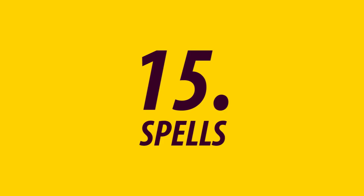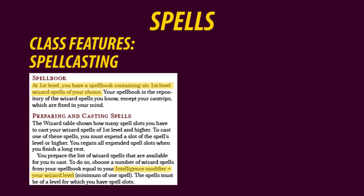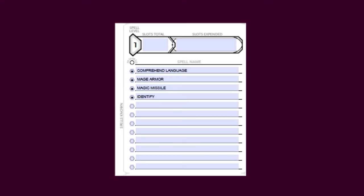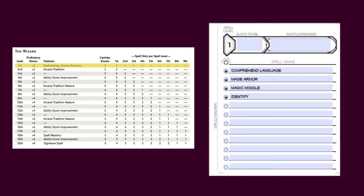How many spells a character can learn and prepare depends on the class. As my character is a wizard, I check the wizard class — each class has its own spellcasting table. At level 1, I have a spellbook containing 6 first-level wizard spells of my choice. I can prepare as many spells as my intelligence modifier plus my wizard level, meaning a total of 4. Fill in 4 circles at level 1 and choose your spells from the spells list. My wizard has 2 level-1 spell slots, meaning he can cast level-1 spells only twice a day — until he has had a long rest and replenished his spell slots.